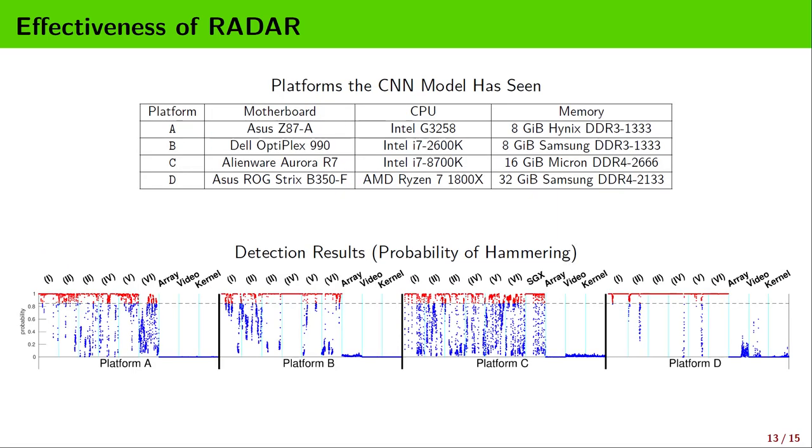First, we evaluate our RADAR system on four platforms, A, B, C, and D. Our CNN model was trained using the positive and negative examples collected from these four platforms. When the probability given by the CNN model is higher than the threshold, 0.85, it is considered to be a Rowhammer attack. From the detection results, we can observe the effectiveness of our system.